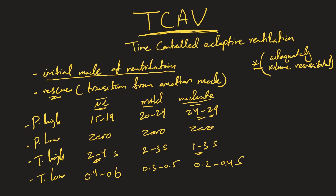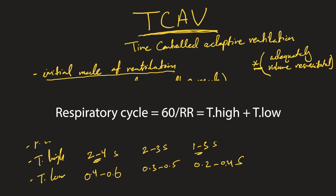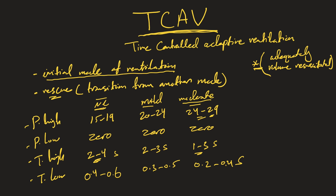Remember that respiratory rate affects T-high and T-low because T-high and T-low together make up the respiratory cycle. The respiratory cycle equals 60 seconds divided by the respiratory rate — so at 15 breaths per minute, the cycle is 4 seconds. By adjusting the respiratory rate, you can influence T-high and T-low. We'll come back to why we use these values, but these are the initial starting points.